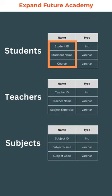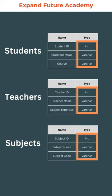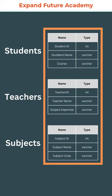All these elements present inside the student table are called as attributes. The types mentioned in the other column represent the type of data these attributes will hold. Now the collection of all these tables together is called as a database.